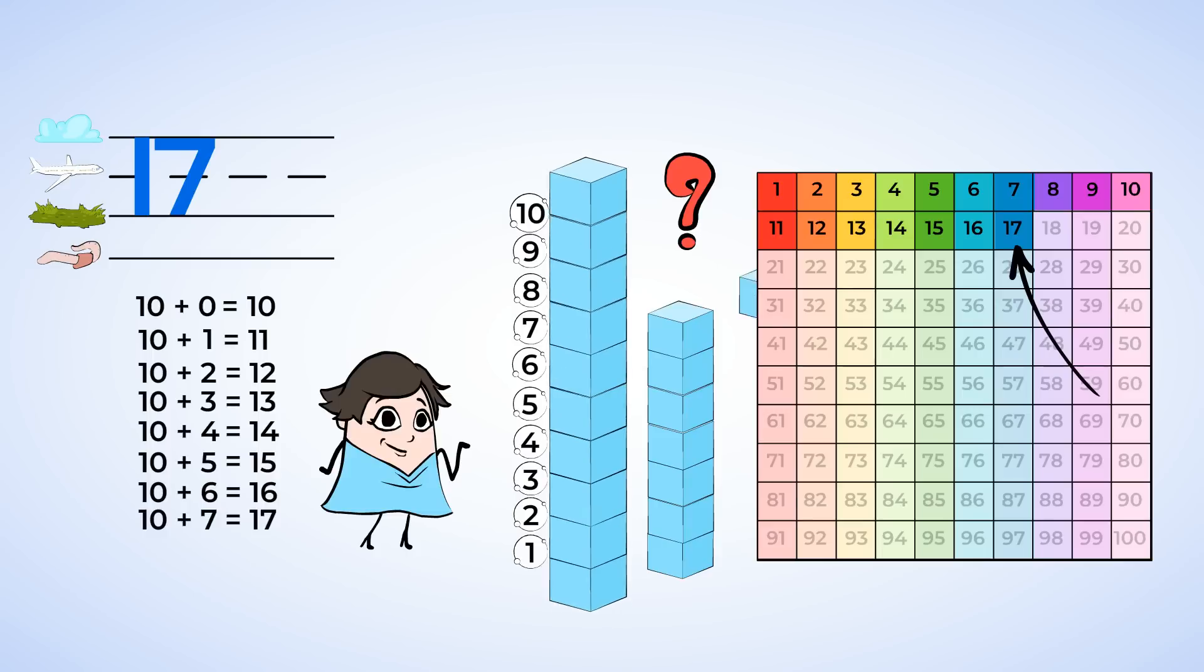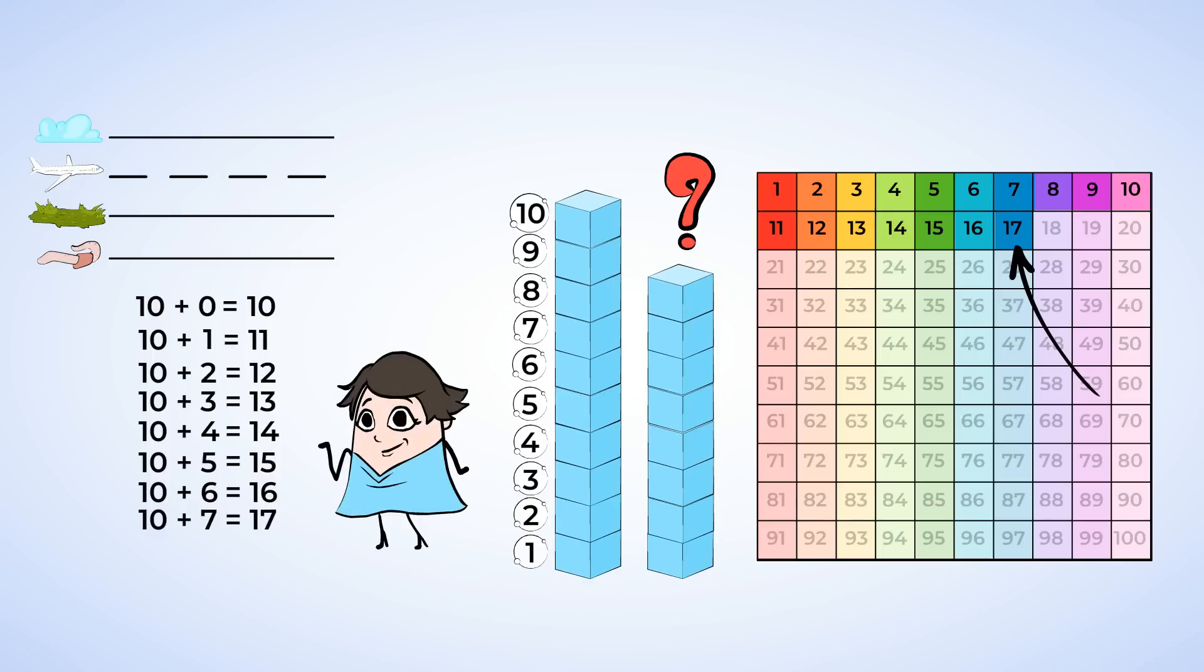And now we have 10 and 8 more. Write a 1 and an 8. Around and down, then around and up. 10 plus 8 equals 18.